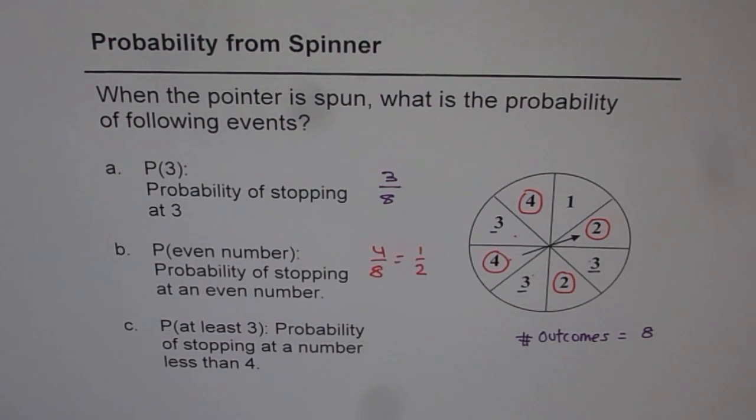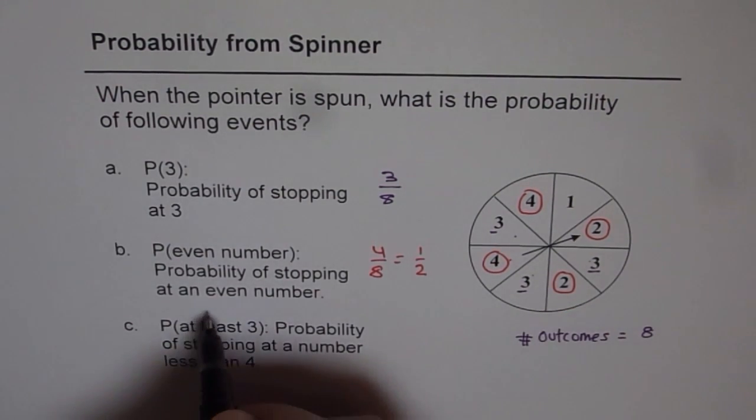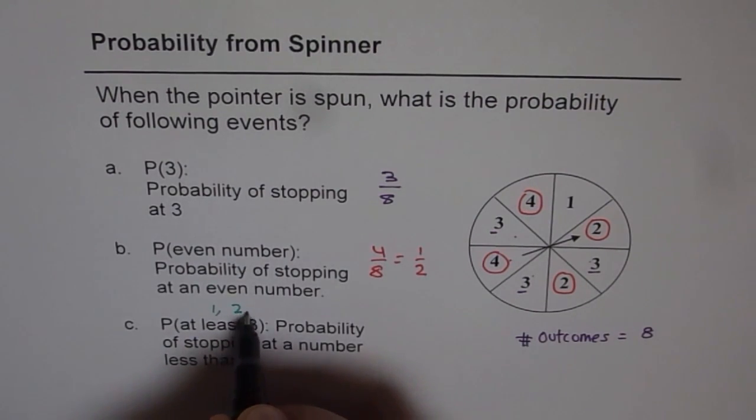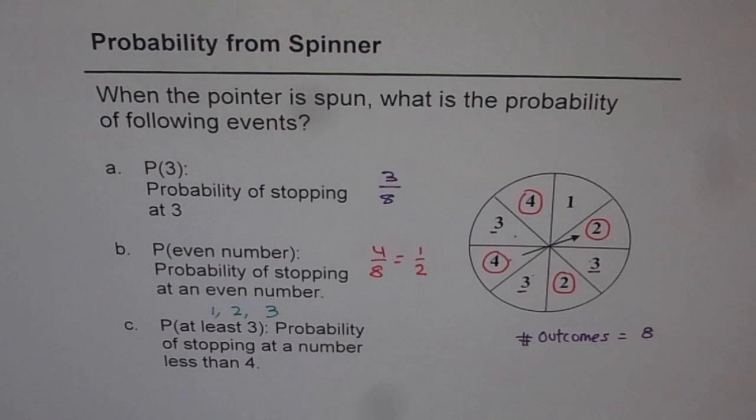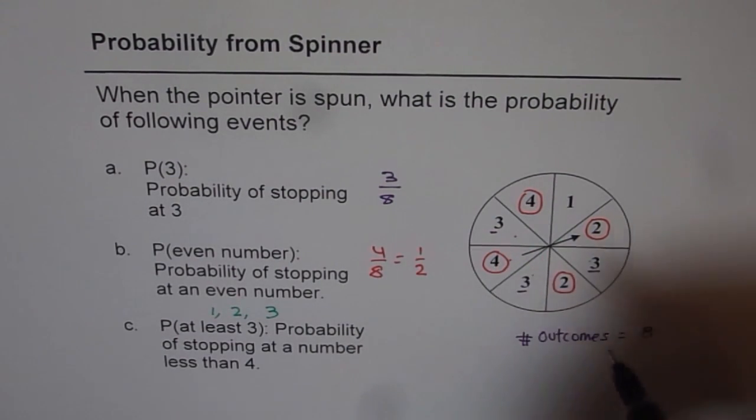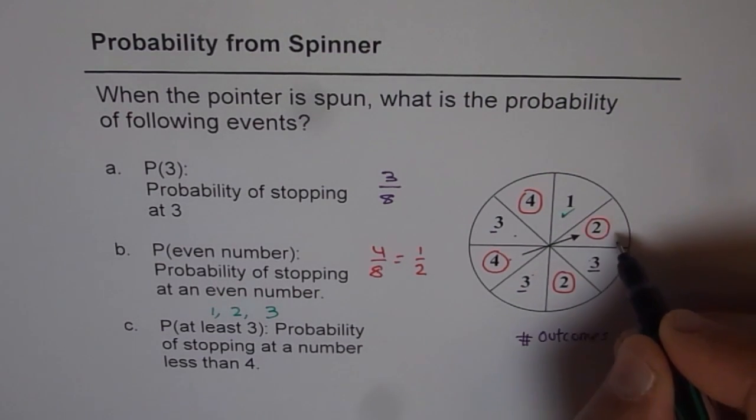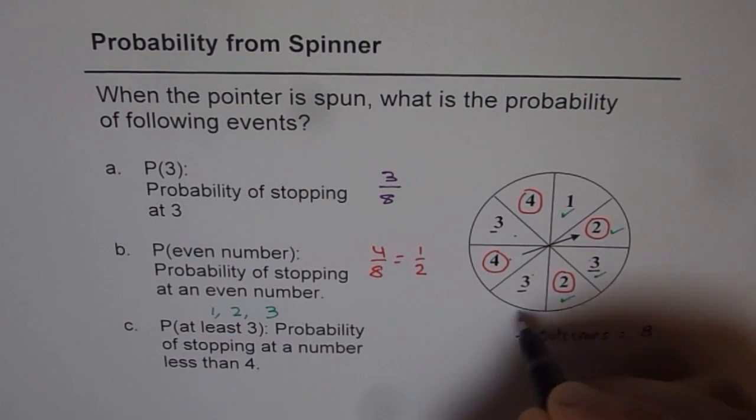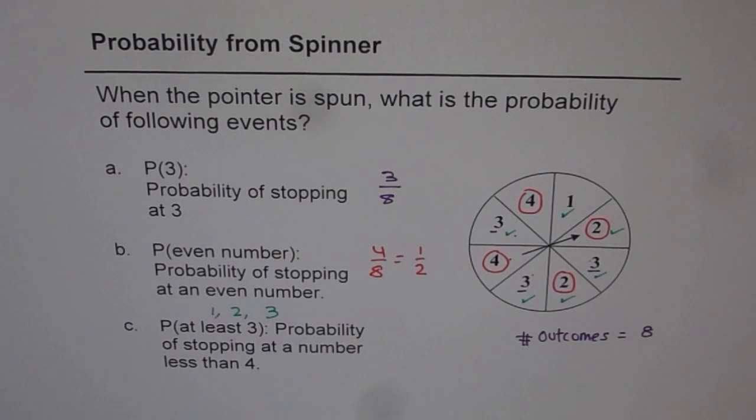The last one here is at least 3. At least 3 means probability of stopping at, you could stop at 1, 2 or 3. So there are 3 different combinations. So what are the numbers which qualify? Everything except 4. Do you see that? Everything except 4, this is at least 3, at least 3, at least 3. So all these are at least 3.